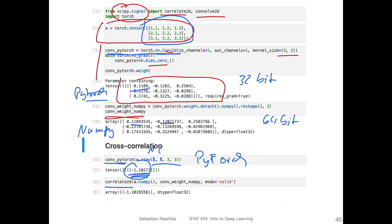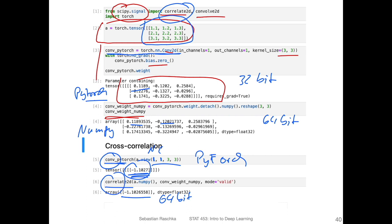Now, if I use the cross-correlation function here from scipy, you can see I get exactly the same value. Of course we have 64-bit precision here, so there are a few more digits, but overall it's also minus 1.102. So it's exactly the same value. The convolution in PyTorch is the same as the cross-correlation in scipy.